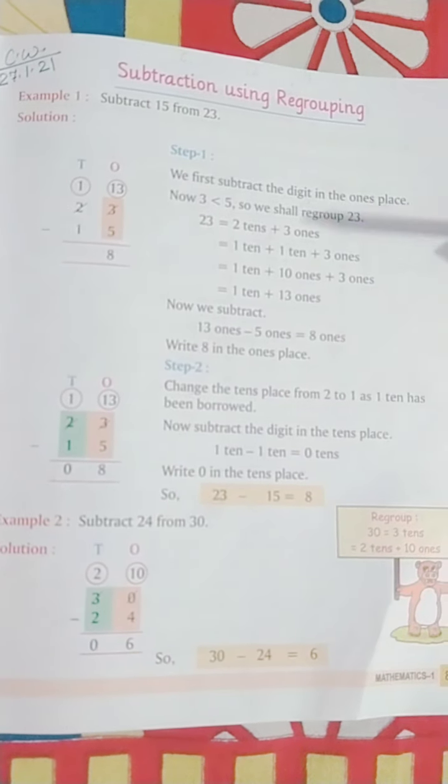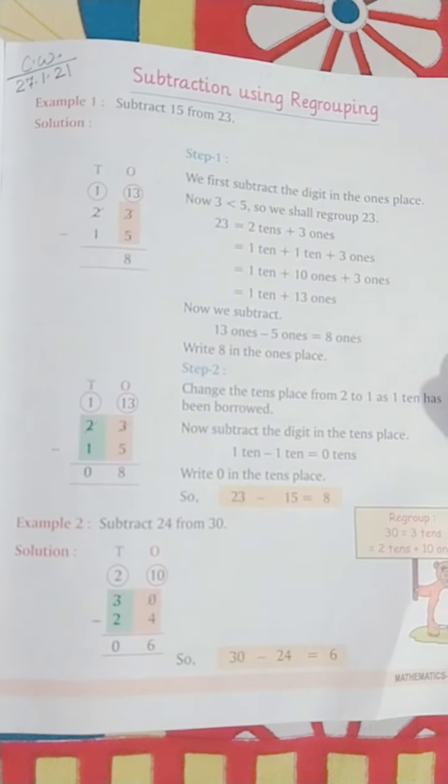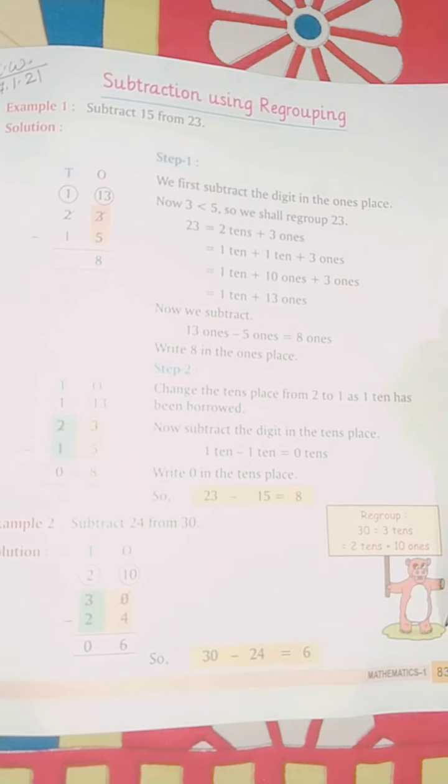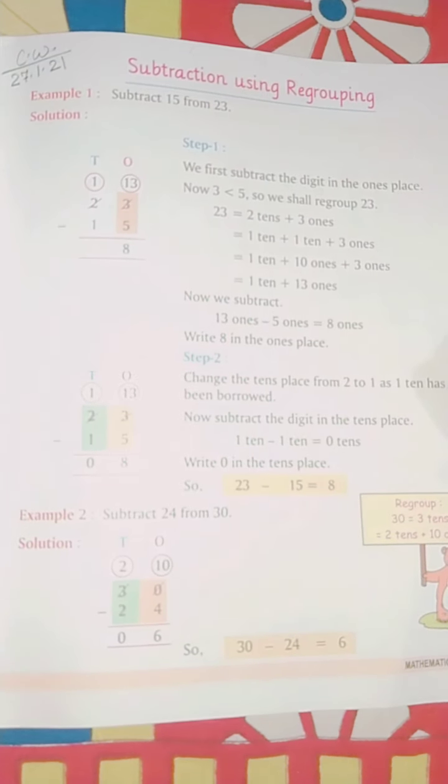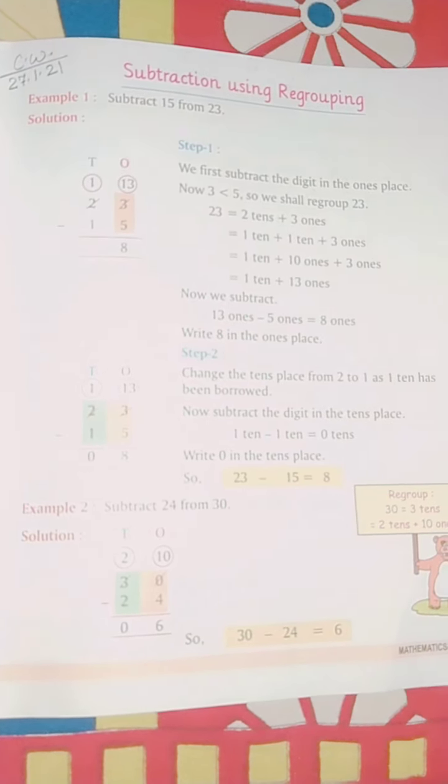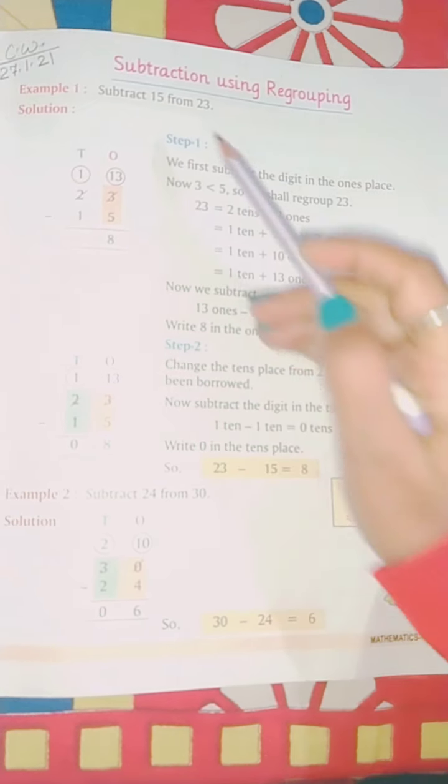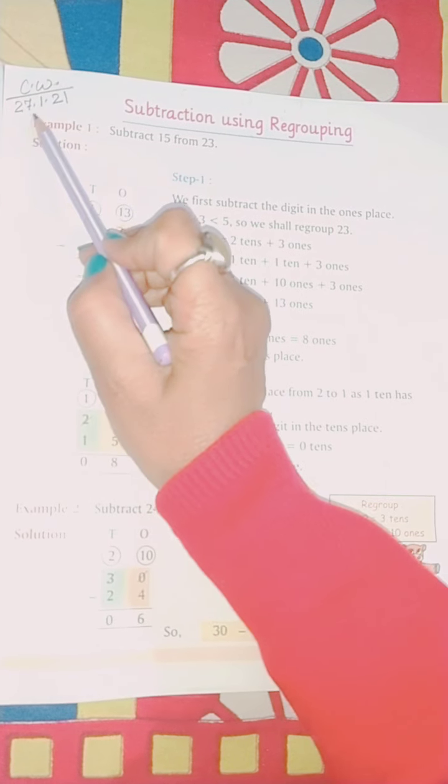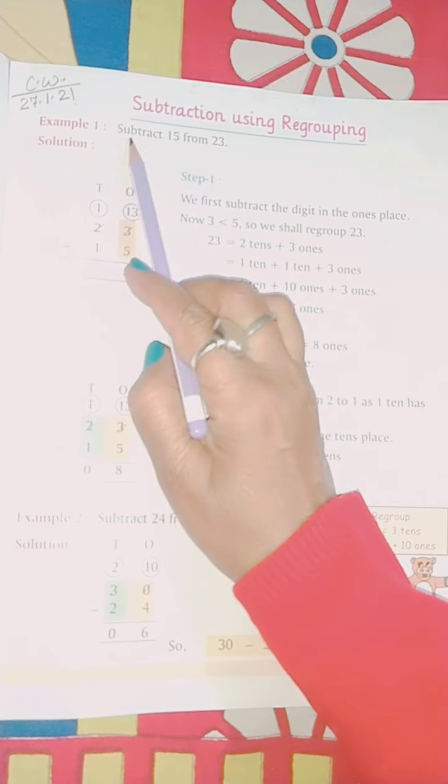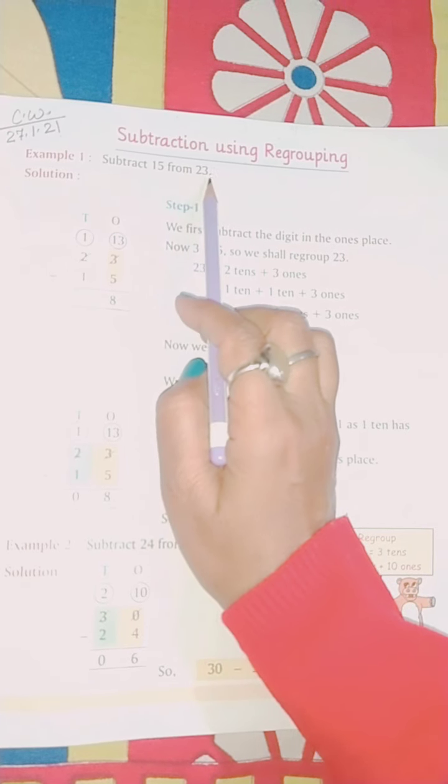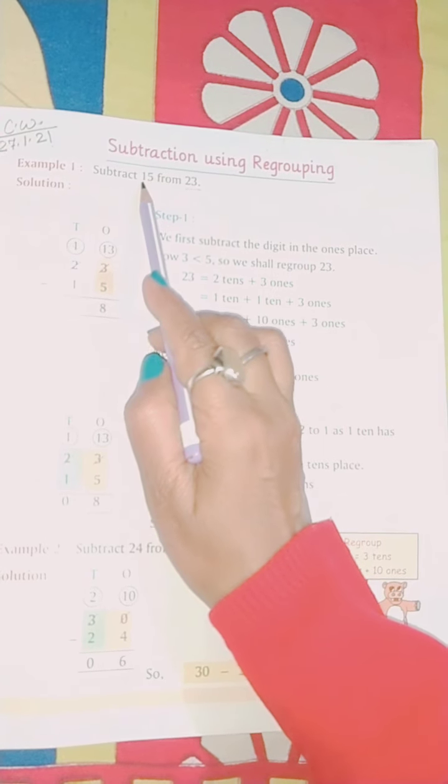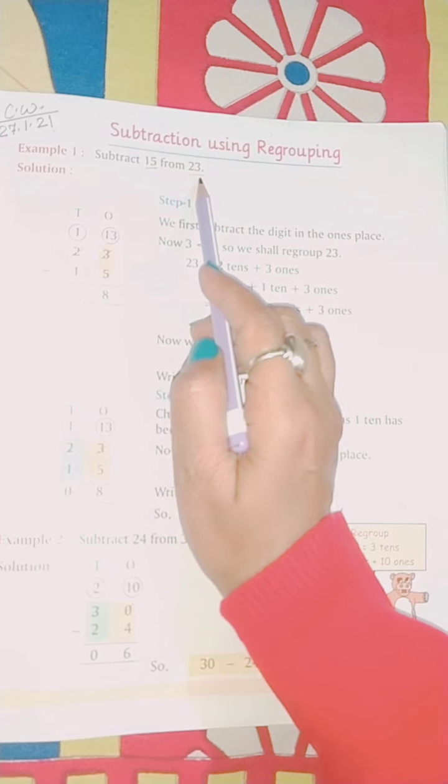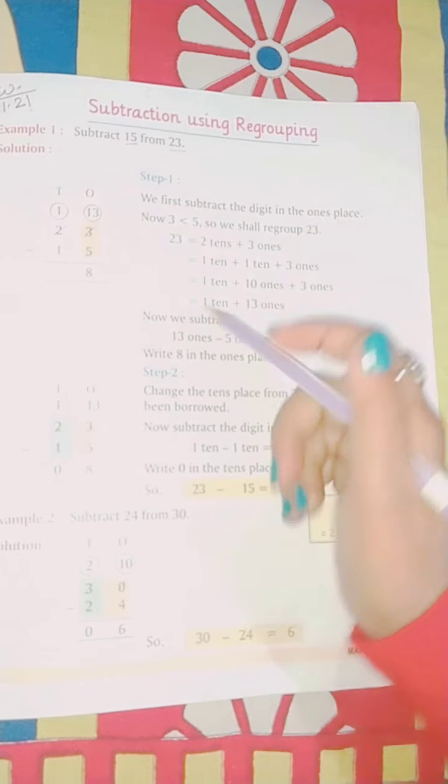Now open page number 83 in your maths book. Now we will understand by doing examples in the book. Page number 83, subtraction using regrouping. Write CW and today's date. Example 1: Subtract 15 from 23. Now 23 is more and 15 is less, लेकिन 15 में से आपको 23 minus करना है. How will we do? We will see.